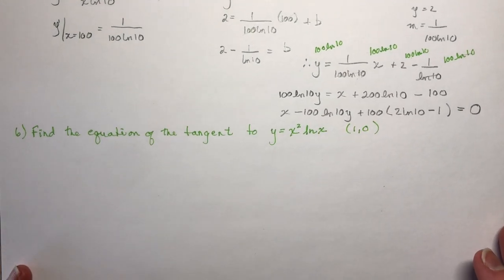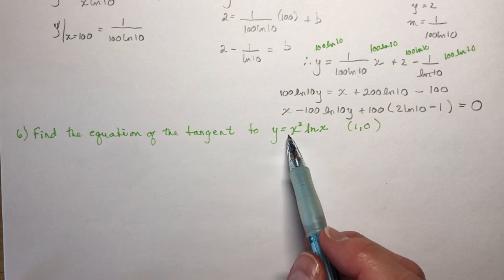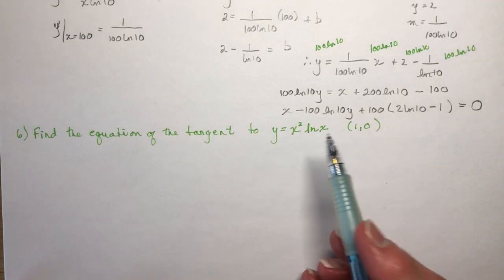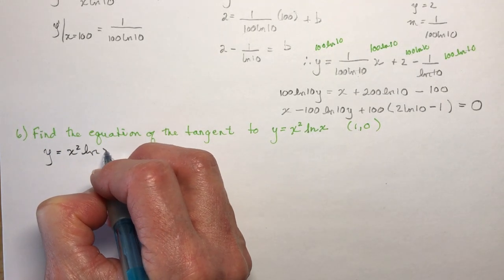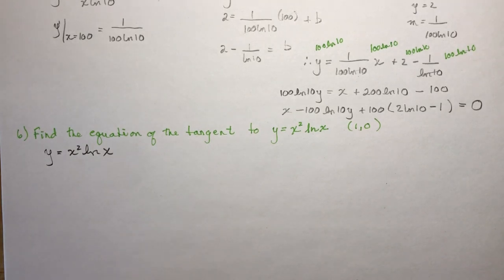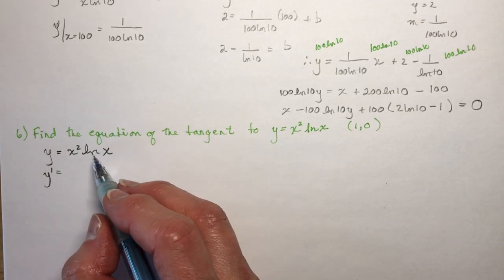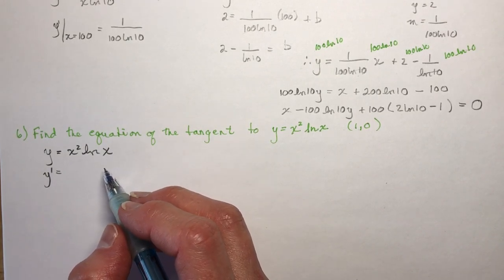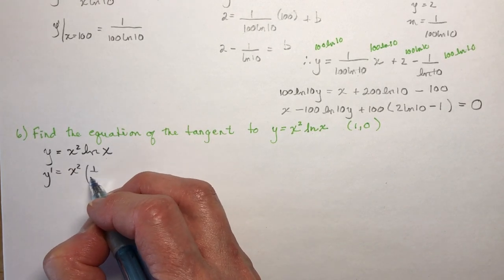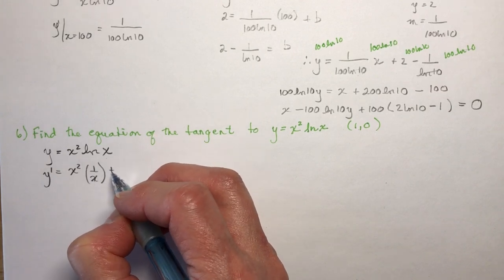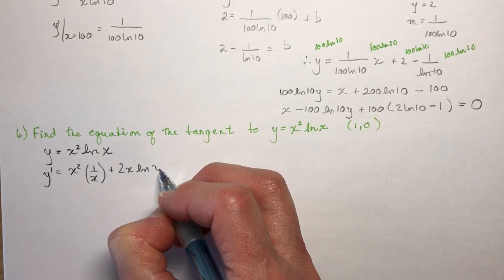The second tangent line uses the natural log. Find the equation of the tangent to y equals x²·ln x at (1, 0). This is a product, so we use the product rule along with the derivative of ln x which is 1 over x. So y prime equals x²·(1/x) plus ln x·2x, which simplifies to x plus 2x·ln x.